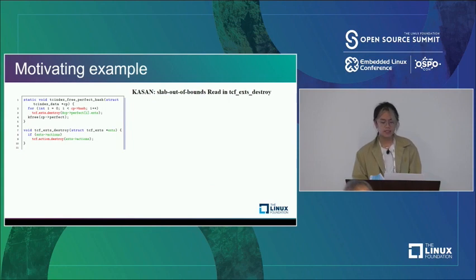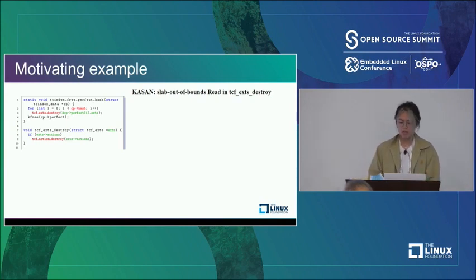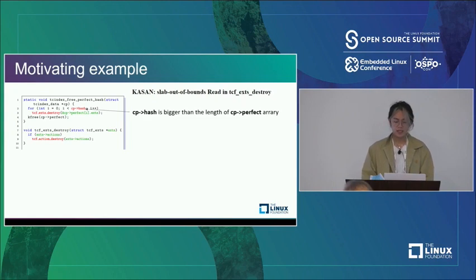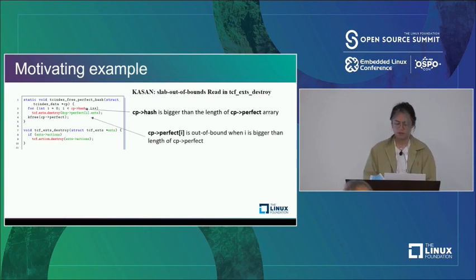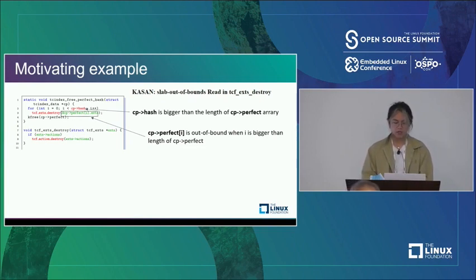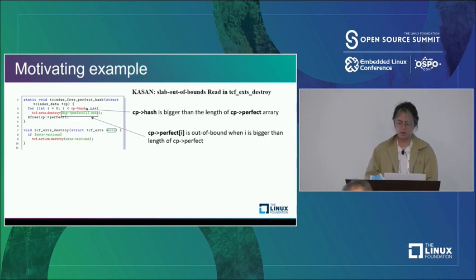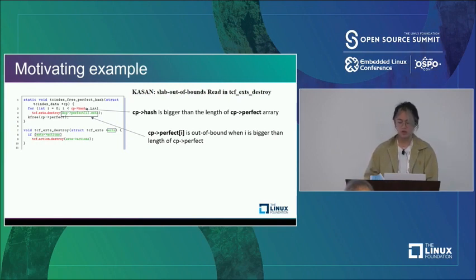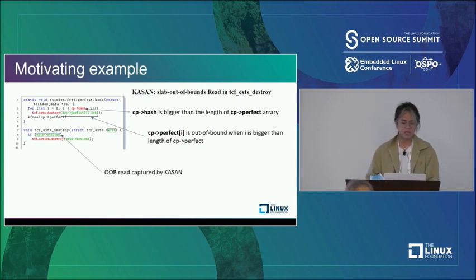This is a real case from SysBot — a motivating example with simplified source code. The root cause is that CP hash is bigger than the length of the therapy_perf array. When the loop index i is bigger than the array length, the exts becomes out-of-bounds. Because exts is out-of-bounds, KSAN captures an out-of-bounds read at line 98. When exts tries to dereference the data pointer action, KSAN reports it to SysBot as a KSAN out-of-bounds read in the TCF exts destroy function.